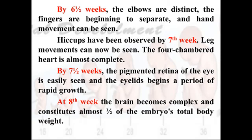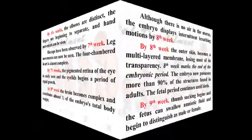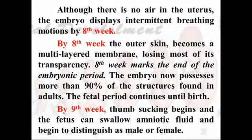By seven and a half weeks, the retina of the eye can be easily seen with pigmentation and eyelids begin a period of rapid growth. At the eighth week, the brain becomes more complex and now constitutes half of the embryo's total weight — meaning 50% of the embryo's weight is the brain and 50% is the other body organs. This is related to cephalocaudal development. Although there is no air in the uterus, the embryo displays intermittent breathing motion by the eighth week.